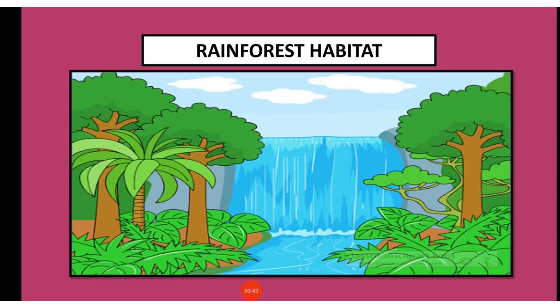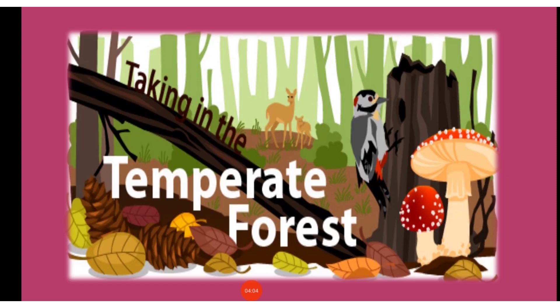Let's look at the rainforest habitat. This habitat receives a lot of rain and hence it is rich in animal life. The climate is very hot and humid. Mammals, amphibians and tall trees, creepers and grasses are found here.